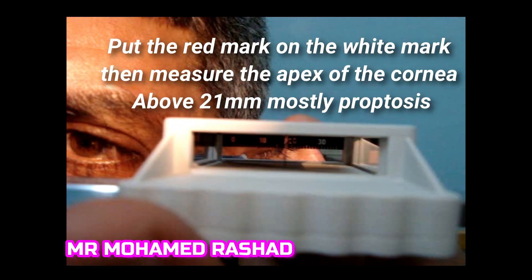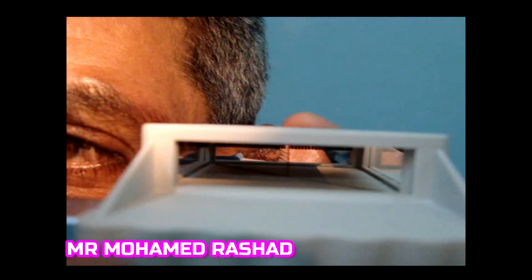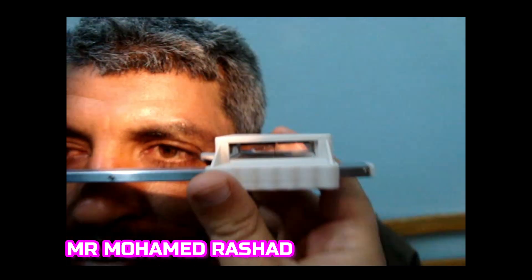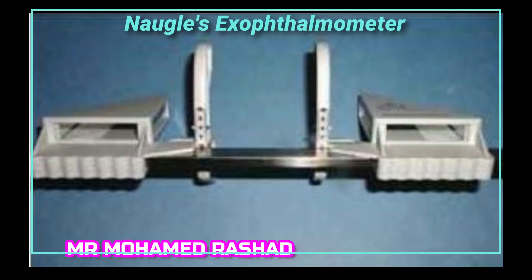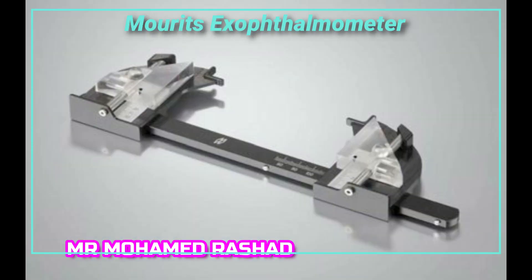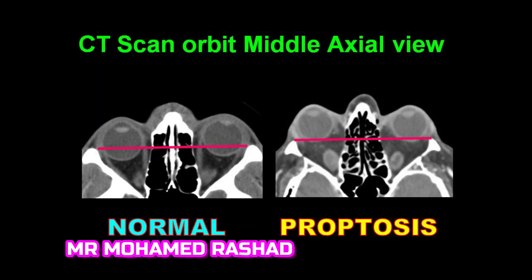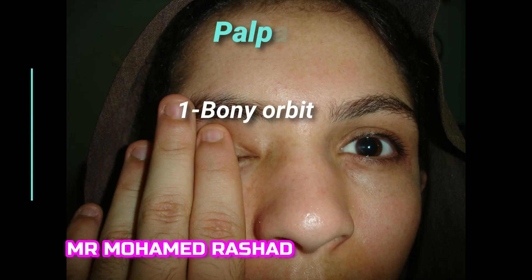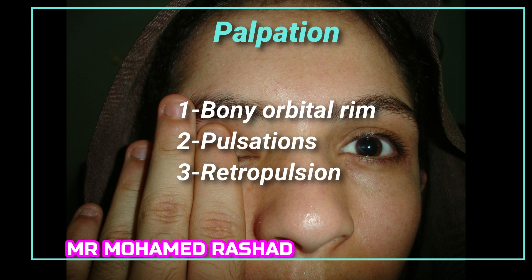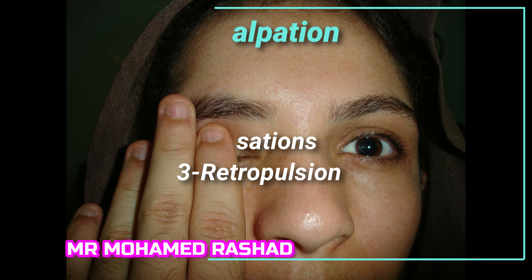A reading above 21 millimeters is mostly proptosis. There are other exophthalmometers, such as Naugle's exophthalmometer which measures vertical disparity, and Moorfield's, which avoids parallactic movements. A line drawn between the two lateral orbital rims is used as reference — if the globe is above this line, that indicates proptosis. On palpation, you can feel the bony orbital rim, assess for pulsations, and test retropulsion by pushing on the globe.